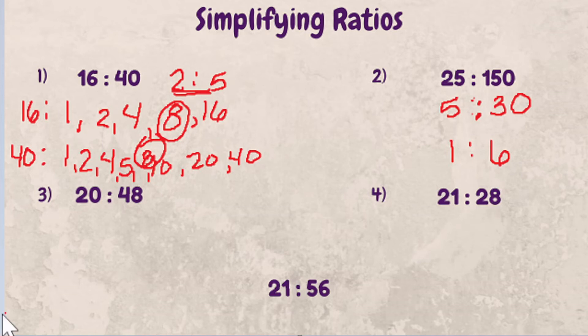Example number 3. Let's look at 20 to 48. So the factors of 20 are 1, 20, 2, 10, 4, and 5.